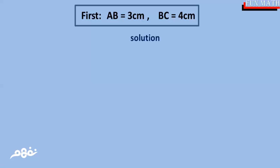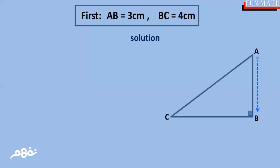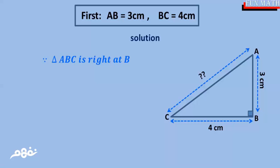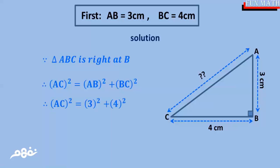First case — when AB equals 3 centimeters and BC equals 4 centimeters. The solution: since triangle ABC is right-angled at B, therefore, by using the Pythagorean theorem, AC squared equals AB squared plus BC squared. So AC squared equals 3 squared plus 4 squared, which equals 25.